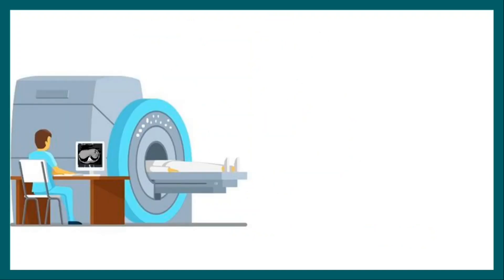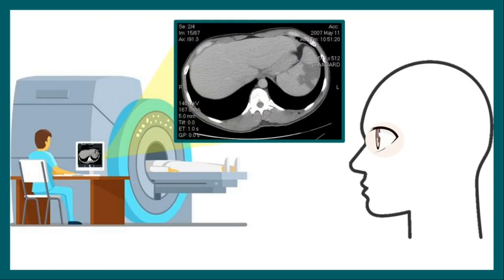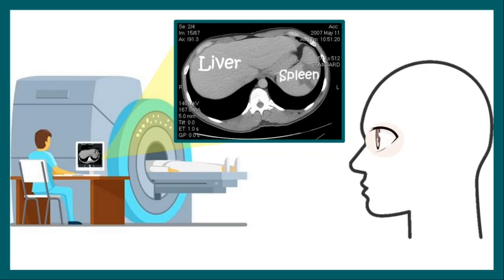When we look at a CT scan, we look at it from the bottom end of the patient. Hence, the CT scan appears somewhat like this. In this image, even though the liver appears on the left-hand side, it is actually the right-hand side of the patient. And the spleen, even though it appears to be on the right-hand side, is actually the patient's left-hand side.